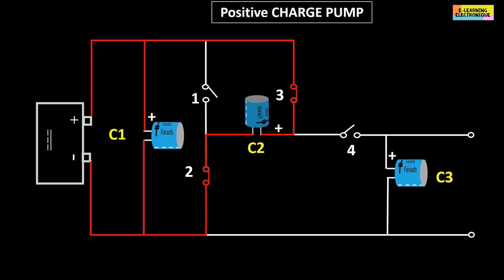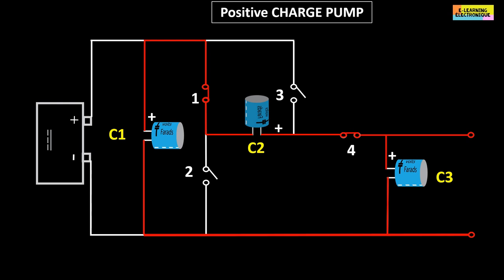In the second phase, switches 2 and 3 are open simultaneously while switches 1 and 4 are also closed simultaneously. C1 and C2 are in a series configuration and at the same time they are in parallel configuration with respect to capacitor C3. The latter will be charged to twice the input voltage.